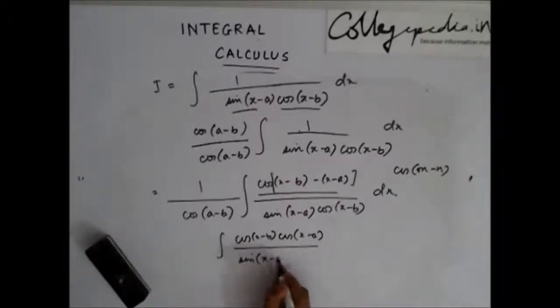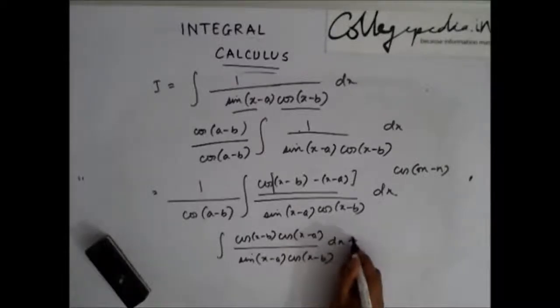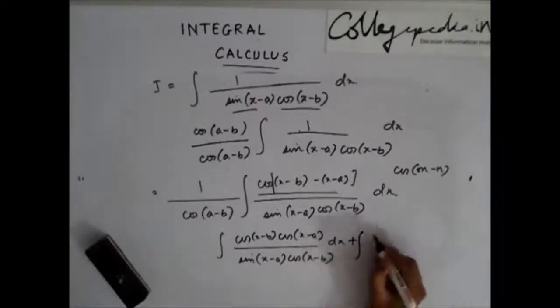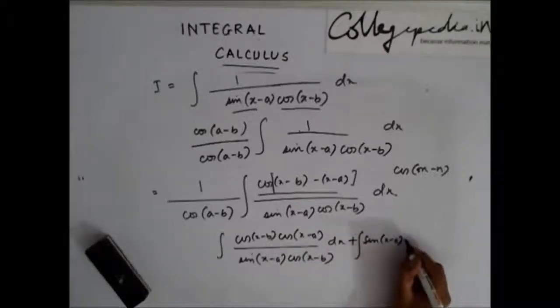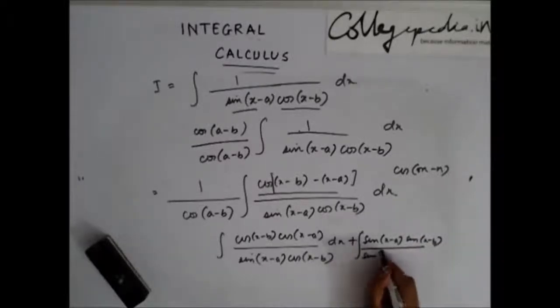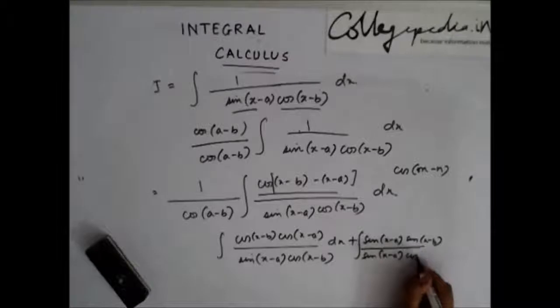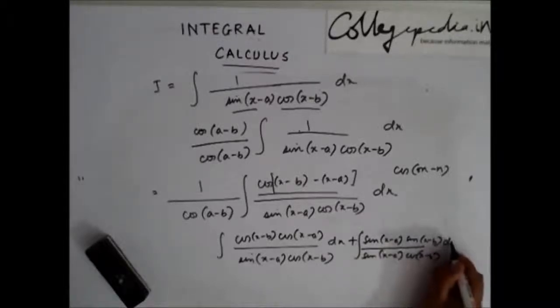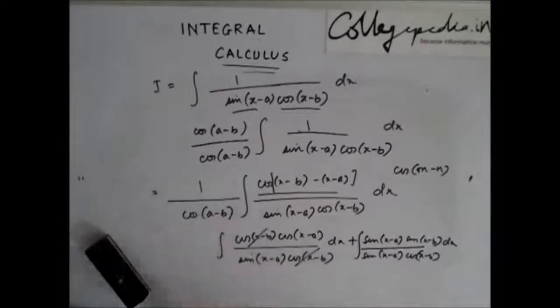I have integration of cos x minus b cos x minus a by sin x minus a cos x minus b dx plus integration of sin x minus a sin x minus b by sin x minus a cos x minus b dx. Now see here what happens. This gets cancelled with this and here this gets cancelled with this.